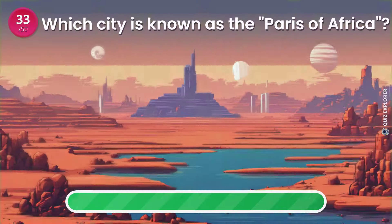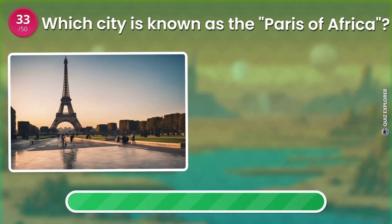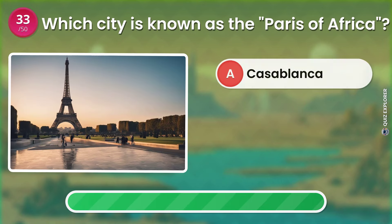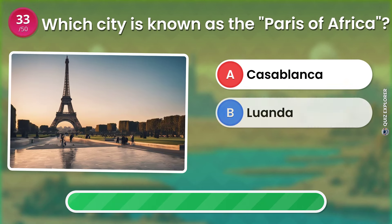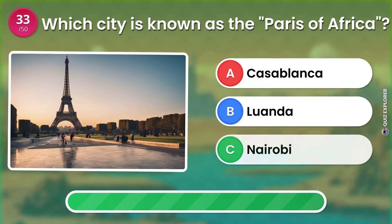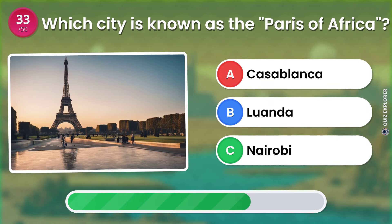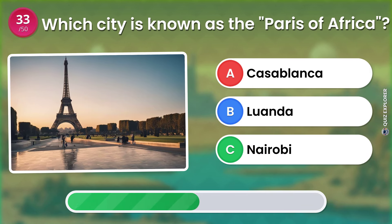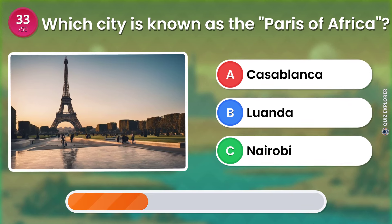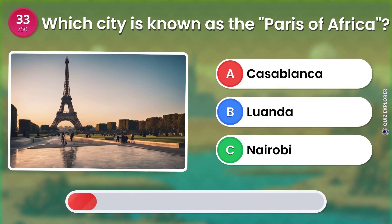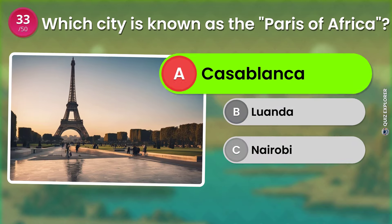Which city is known as the Paris of Africa? Casablanca. Luanda. Nairobi. The answer is: Casablanca.